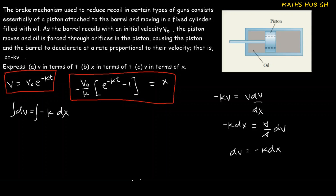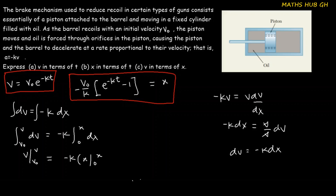We integrate this as a definite integral with conditions v-naught to v on the left and zero to x on the right: integral from v-naught to v of dv equals minus k times integral from zero to x of dx. Integrating gives v evaluated from v-naught to v equals minus k times x evaluated from zero to x. Substituting boundary conditions: v minus v-naught equals minus kx.